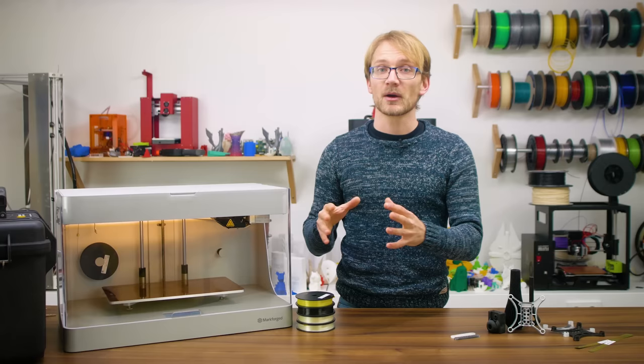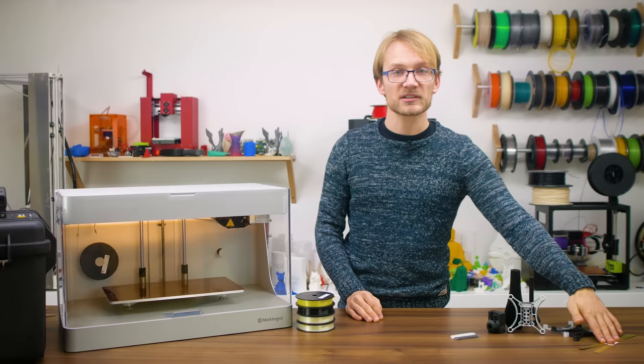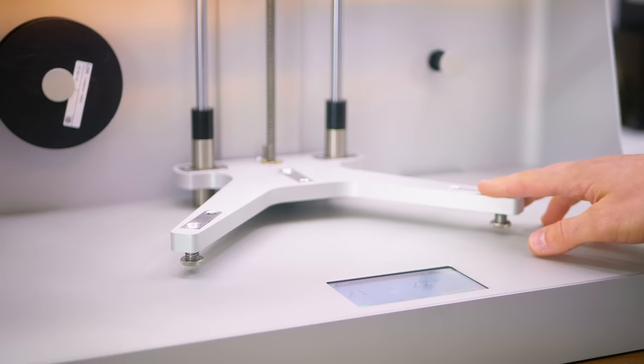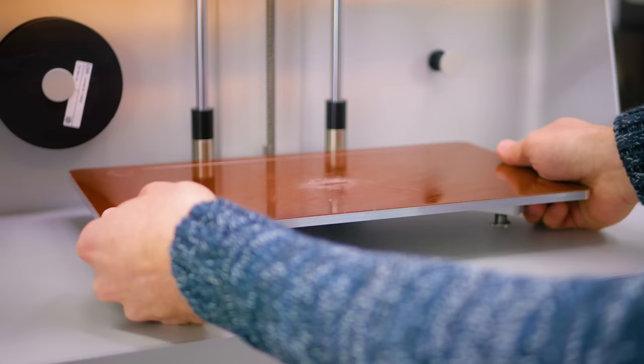For example, the Bed Leveling Wizard has you using these two precision shims and goes over each adjustment spot twice. Yes, it doesn't have auto bed leveling, but with these smart lever-style adjustment points, if you set the bed adjustment points correctly at once, you can even remove and reinstall the bed as often as you'd like and it just snaps into place perfectly every time.